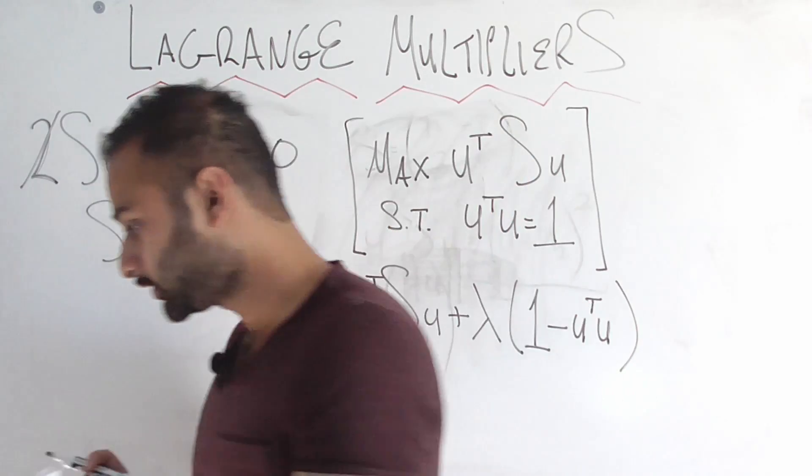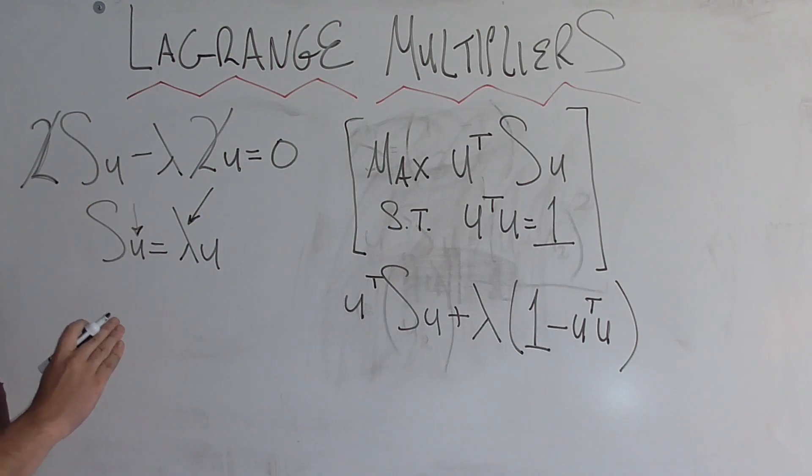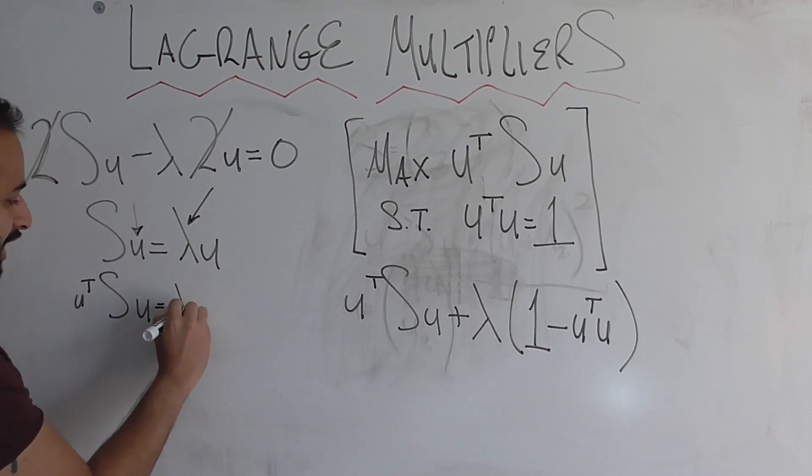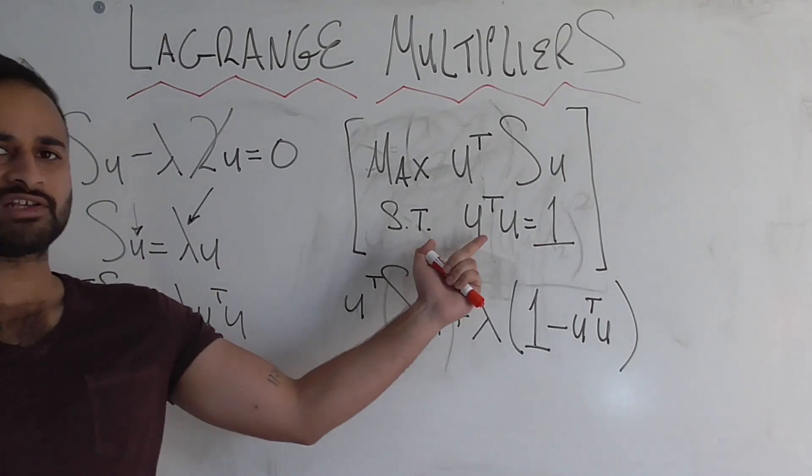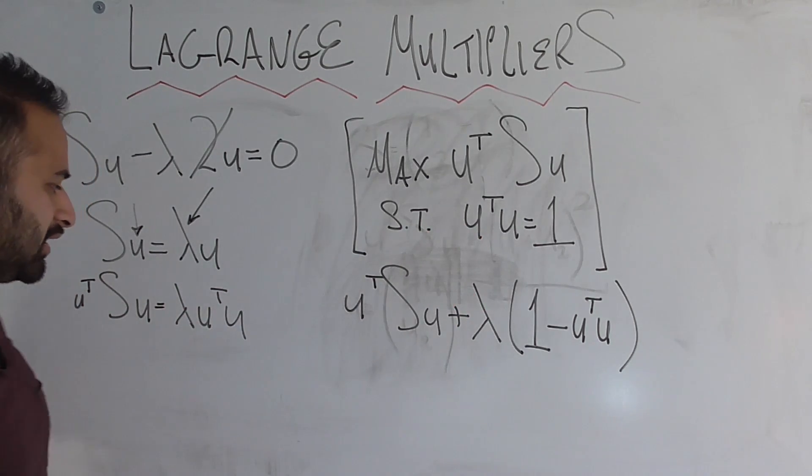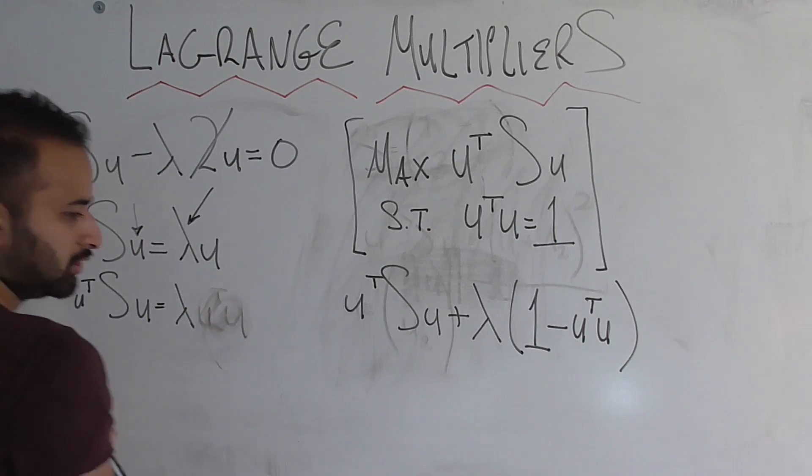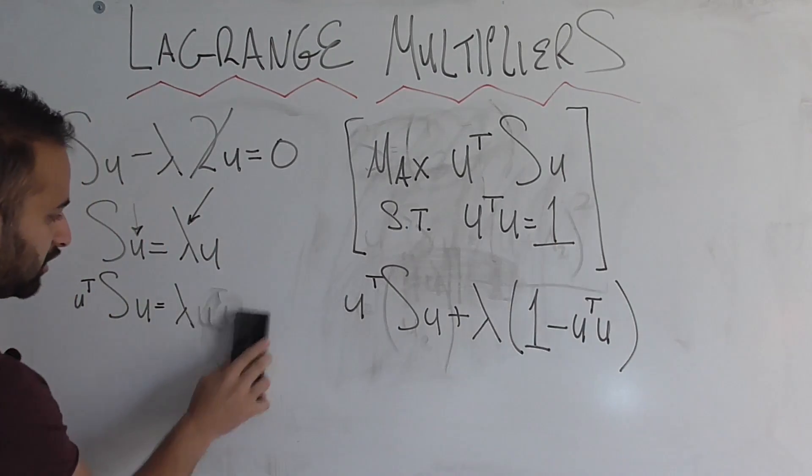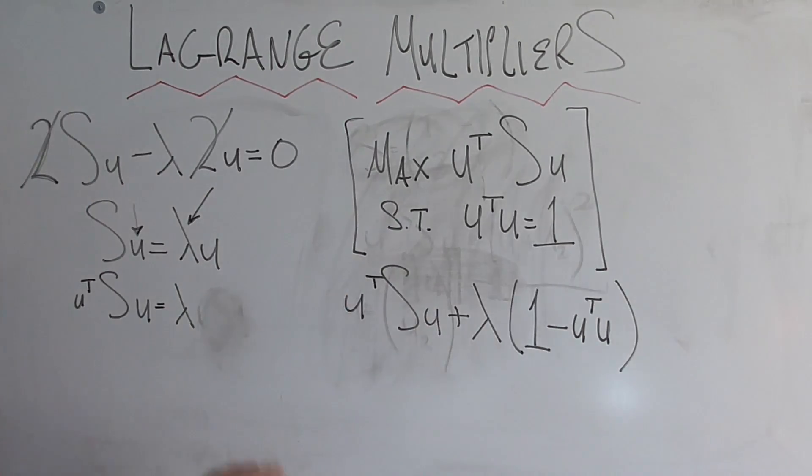To figure that out, we're going to do another fancy trick. That fancy trick being we're going to go ahead and left multiply each side of this equation by U transpose. So we're going to get U transpose SU is equal to lambda U transpose U. And what is U transpose U? Well, it has to be equal to 1. We know that. We set it. So that means that we can just get rid of U transpose U.